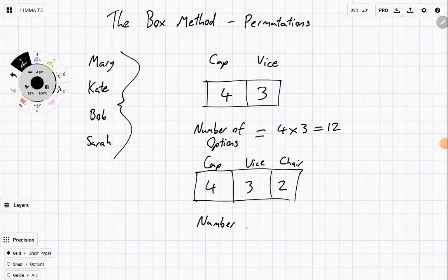So the number of options, that's going to be four times three times two. Four times three is twelve. Twelve times two is twenty-four. And there we have it. Simple way of counting the number of options. The box method.